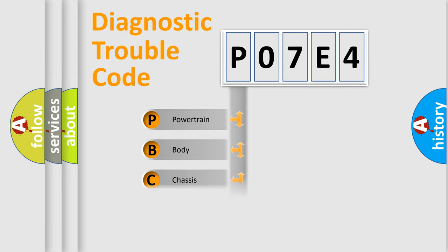Powertrain, Body, Chassis, and Network. This distribution is defined in the first character code.